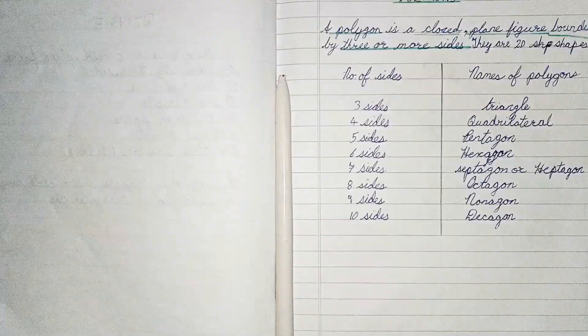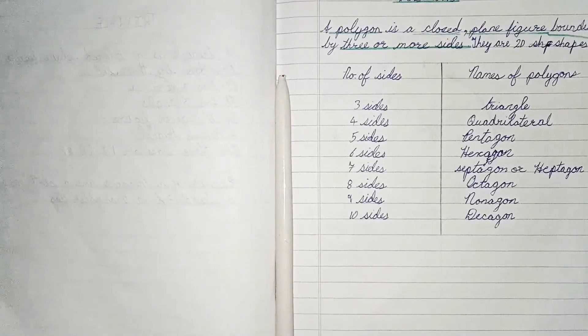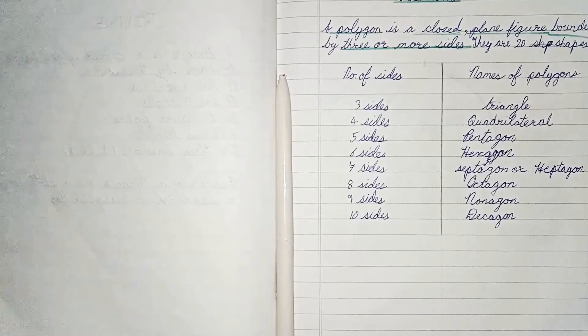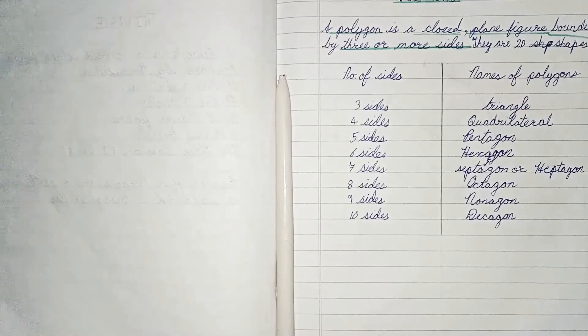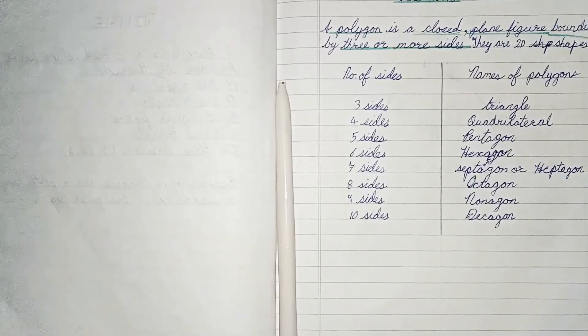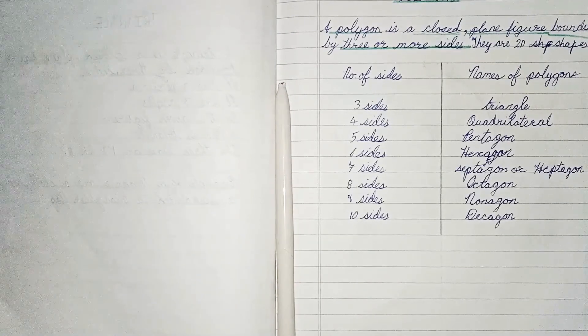Next plane figure is polygon. A polygon is a closed plane figure bounded by three or more sides. They are 2D shapes. The name of polygons depend upon the number of sides.